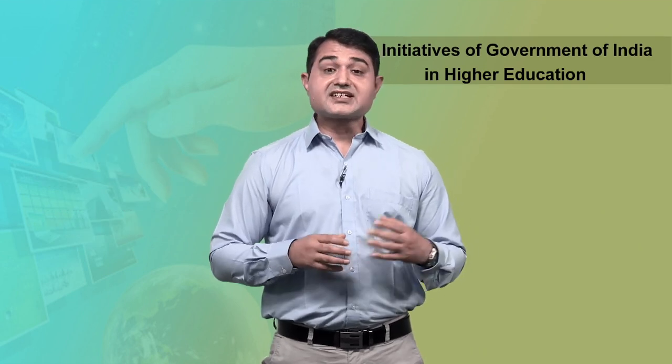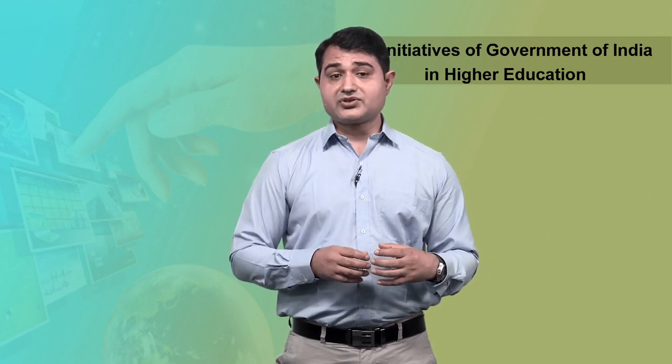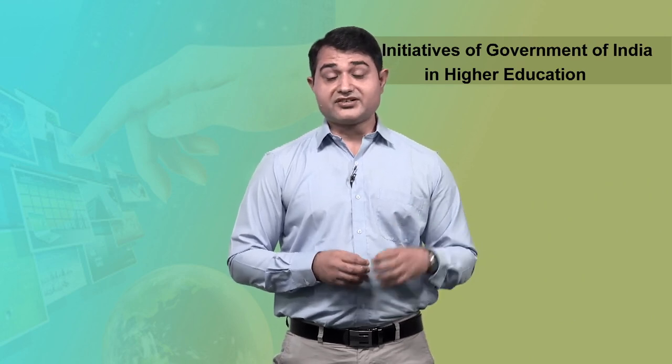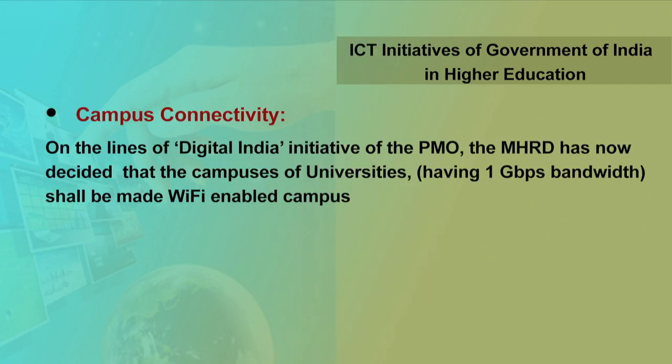The next initiative is Campus Connectivity. Establishment of 1 GBPS connectivity to universities and many colleges has been provided under this project, which also belongs to NMEICT. A total of 600 universities have been connected through 1 GBPS optical fibers. Many colleges have been connected so far with 10 MBPS bandwidth. On the lines of the Digital India initiative of the PMO, the MHRD has decided that campuses of universities having 1 GBPS bandwidth shall be made Wi-Fi enabled campuses.